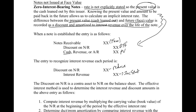The discount on notes receivable is a contra-asset to the note receivable, which means it reduces the value of the note on the balance sheet. As we reduce it down to zero, at the end of the life of the note the discount will be zero, meaning the note will be at face value. We're going to use the effective interest method, which you'll see throughout your intermediate accounting courses — in investments, bonds payable, amortization tables, and leases.